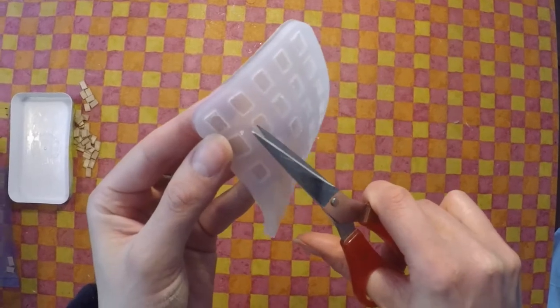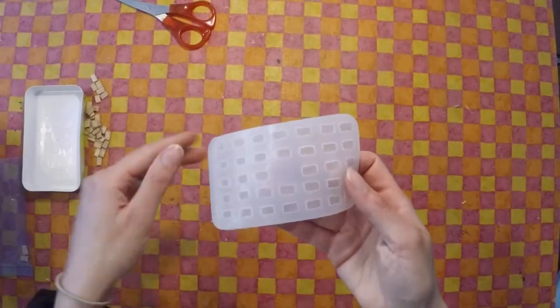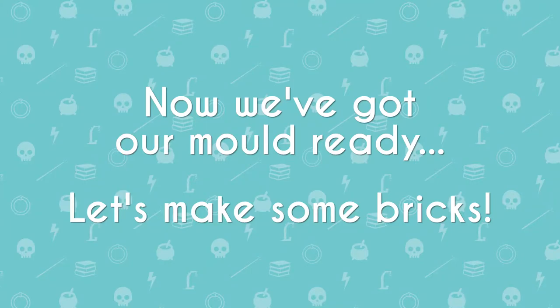I used some scissors to cut away some silicone that was in places where I didn't want it to be. And finally I'm ready to make some actual bricks.